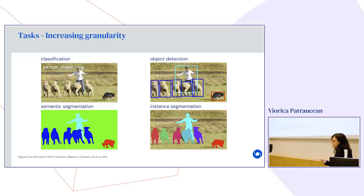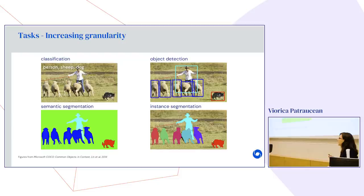The tasks we will cover are listed in increasing granularity — we want to get more and more detail about the scene. Classification gives a sparse description with just a few words. Today we will see object detection, semantic segmentation, and a note on instance segmentation.